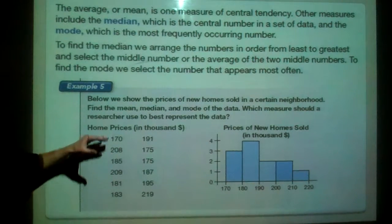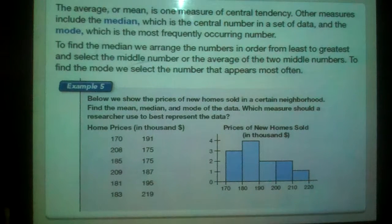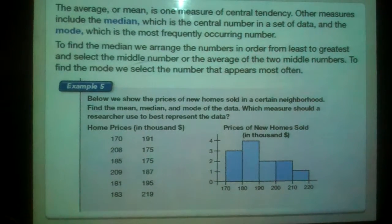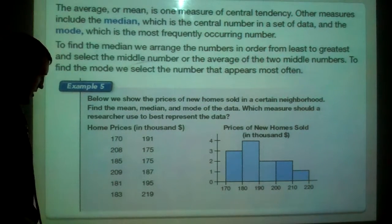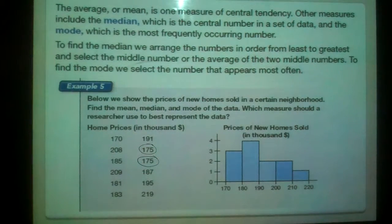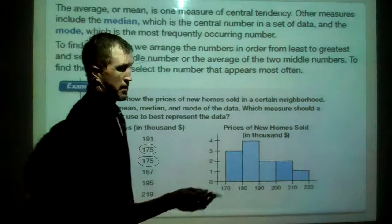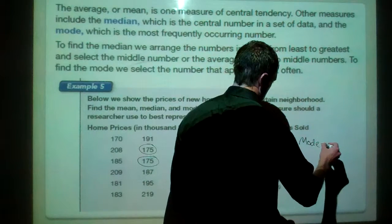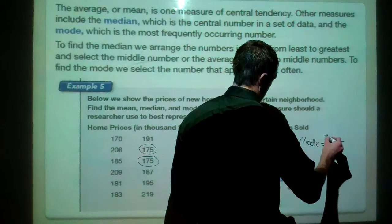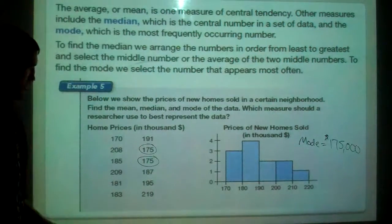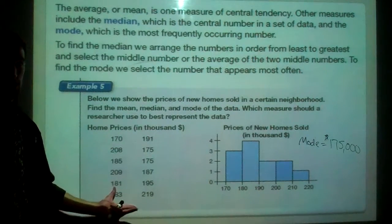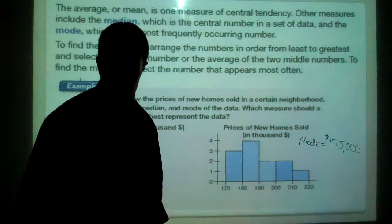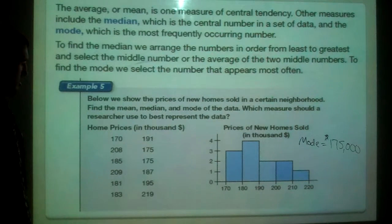So let's take a look at this real quick. We have a set of numbers here. These are home prices in thousands. We want the average, we want the mean, we want the mode of the data. So first things first, let's do the mode. Which one of these numbers occurs the most often? Well, I see 175,000 twice. That's our mode. Now to find the average, I won't go through how to do it. Basically what you'll do is add all these up. There are 12 numbers. So after you add them all up, you'll divide by 12. And you should get your mean.